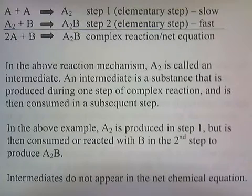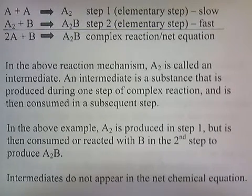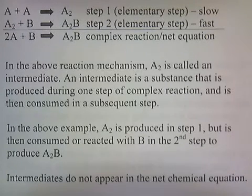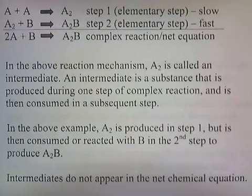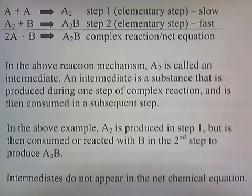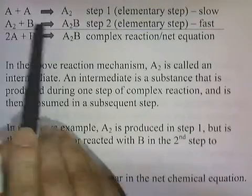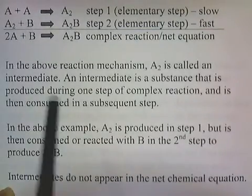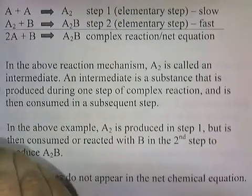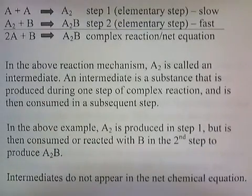In the above reaction mechanism, A2 is called an intermediate. An intermediate is a substance that is produced during one step of a complex reaction and is then consumed in a subsequent step. A2 is produced in step 1 but is then consumed in step 2 when it reacts with B to produce A2B. Intermediates do not appear in the net chemical equation — A2 shows up in the middle, but when you add the two equations together, A2 disappears.